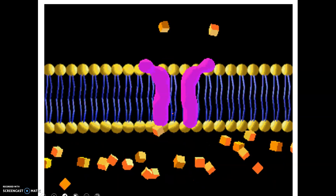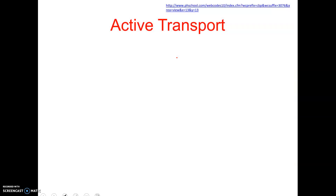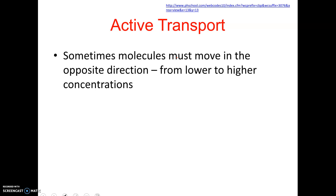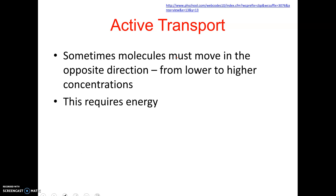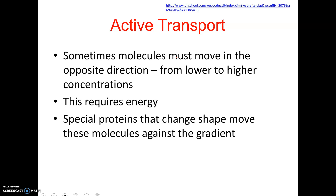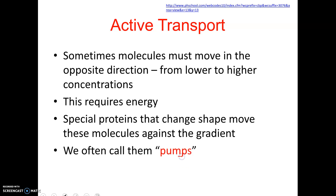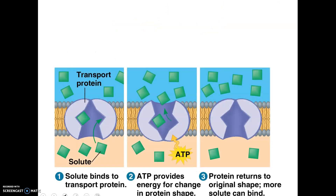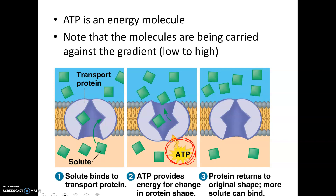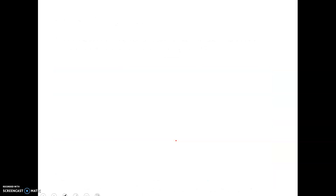That's another animation showing facilitated diffusion — notice it's still going high to low, but through proteins rather than through the membrane itself. Active transport is when a cell needs to pump something against the normal direction — against the concentration gradient — and this does require energy. We use proteins called pumps that physically use energy to pump molecules through the membrane. If you're looking at a picture to identify active transport, look for movement from low to high, and look for ATP since that's what cells use for energy.